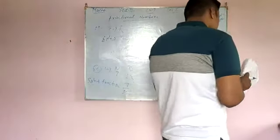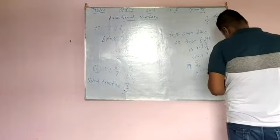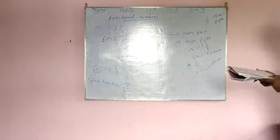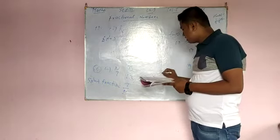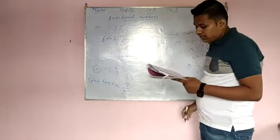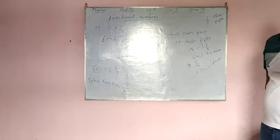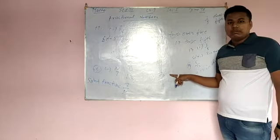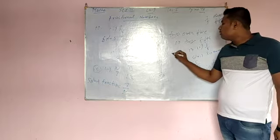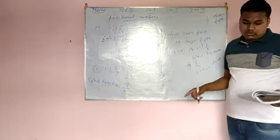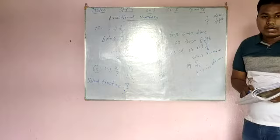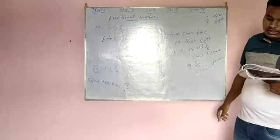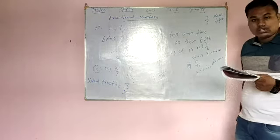Now question 16: find the fraction in which the denominator is 3 more than the numerator. Some numbers are given, like 6 by 9. The denominator 9 is 3 more than numerator 6, because 6 plus 3 is 9. You have to choose the fraction where the denominator is 3 more than the numerator — that is 6 by 9.